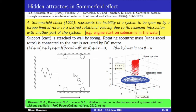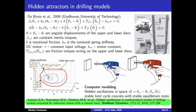A similar effect can be found in drilling systems. We consider a mathematical model of a drilling system derived at Eindhoven University of Technology and also found hidden oscillations there. If we first switch on the power and start the rotation, then add friction, the state of the system tends to the stable equilibrium point. But if we first add friction and then switch on the power and start the rotation, the system can experience vibrations which are hidden because the equilibrium point is stable.